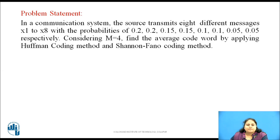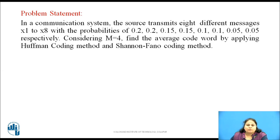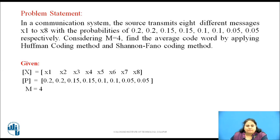Let us see this by using an example. In a communication system, the source transmits eight different messages x1 to x8 with the probabilities given. Considering m equal to 4, find the average codeword length by applying Huffman coding method and Shannon-Fano coding method. The given data is eight messages x1 to x8 with their respective probabilities and m is equal to 4.